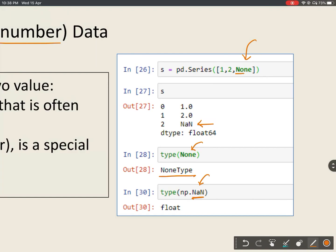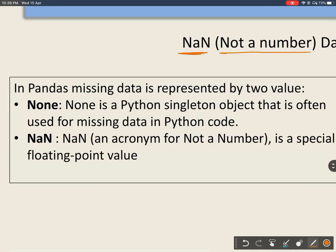That is why when we give None and when Python series will have NaN, all the data will be converted into float and the data type will automatically change to float. So in Python missing data is represented by two values.